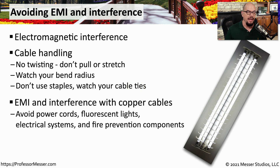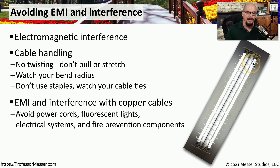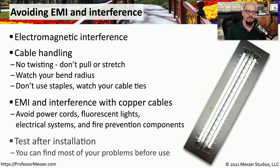With copper cables, electromagnetic interference comes from many different sources, including power cords, fluorescent lights, or anywhere there may be some type of power system. For example, you would never run a copper cable in a ceiling over a fluorescent light, because you're certain to have an excessive amount of EMI. This is why it's very common, after installing a copper or fiber connection, to use a monitoring tool to examine how much signal you're able to get from one side of the cable to the other.